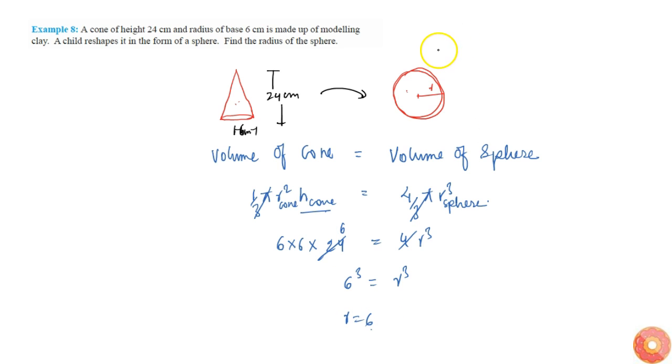Therefore, the radius of the sphere is 6 cm. Since one object is transformed into another, their volumes are equal. By equating the volumes, I found the radius.